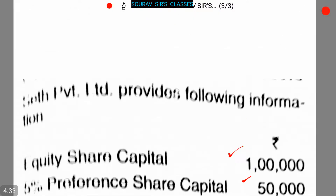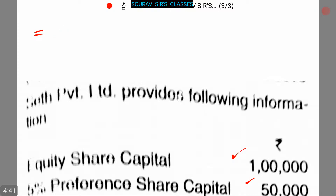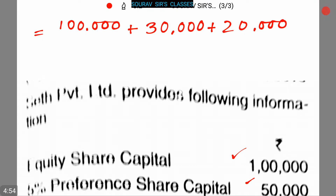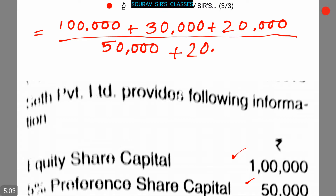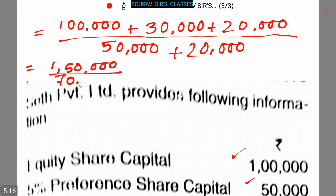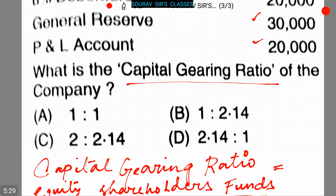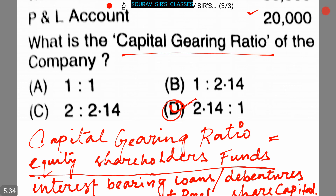Putting in the values: capital gearing ratio equals one lakh plus 30,000 plus 20,000 divided by 50,000 plus 20,000, which equals one lakh fifty thousand divided by 70,000, which equals 2.14 is to 1. So the ratio is 2.14:1, which is option D. That is the correct answer.